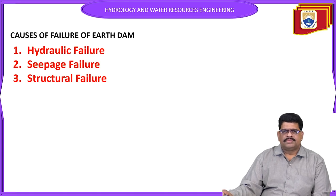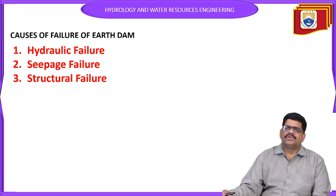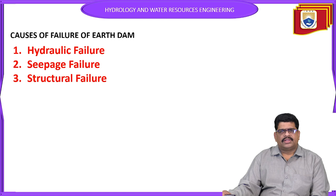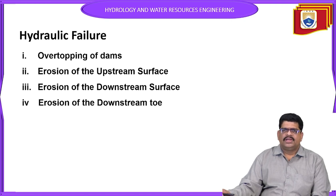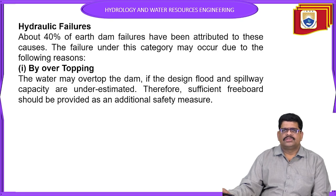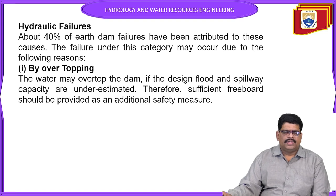Next, causes of failures. We have discussed the definition, types, and design criteria of earthen dams. Now we will discuss the causes of failures. There are three types: the first is hydraulic failures, the second is seepage failures, and the third is structural failures. These three are very important to know during construction of embankment or earthen dams.